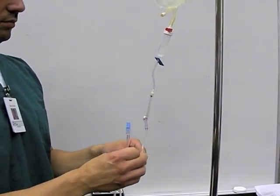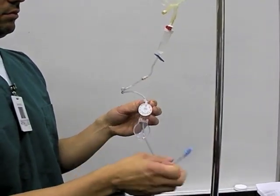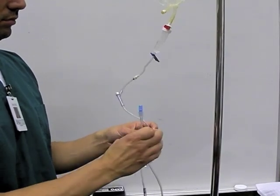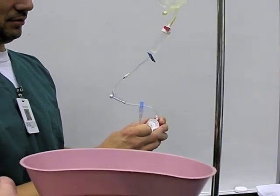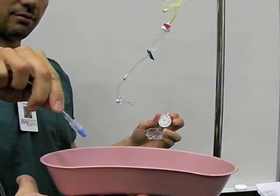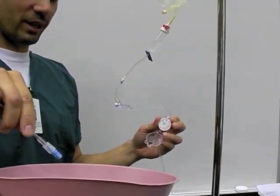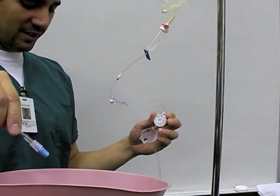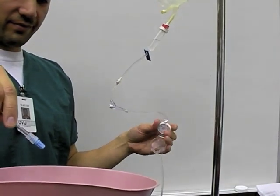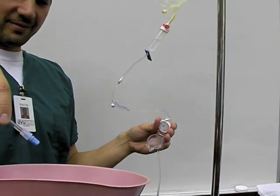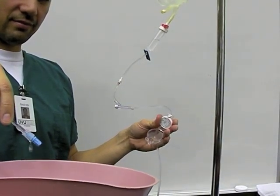The next step will be to prime the administration line. You will open the dial, which will allow the saline solution to flow through the line and purge all of the air. You will drain this into a container, trash receptacle, or an emesis basin as seen. Priming the line is done with the sterile cap still on the line. Once the line is inspected and you have determined that all air bubbles have been purged, turn the dial to the off position and close the clear cover over the dial.